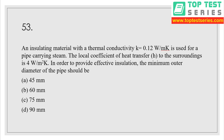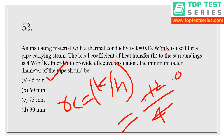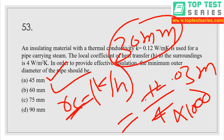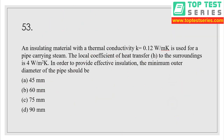Question number 53: insulating material with K = 0.12 watt per meter Kelvin is used for a pipe. Heat transfer coefficient h = 4 watt per meter square Kelvin. For effective insulation, minimum outer diameter needed. Critical radius rc = K/h (cylinder case, not sphere) = 0.12/4 = 0.03 m = 30 mm. Diameter = 2 × 30 = 60 mm — option B is the correct answer.